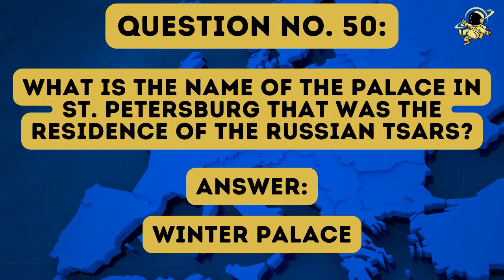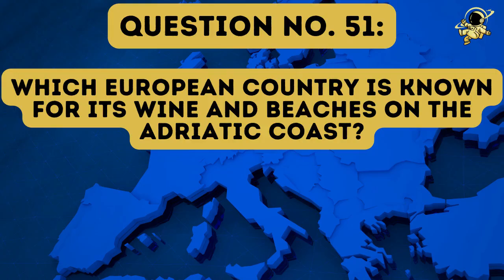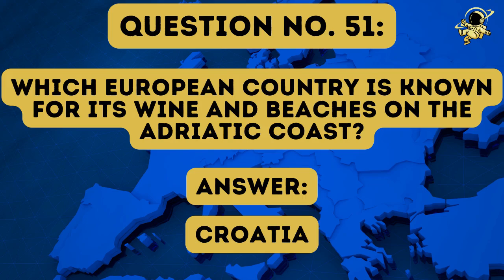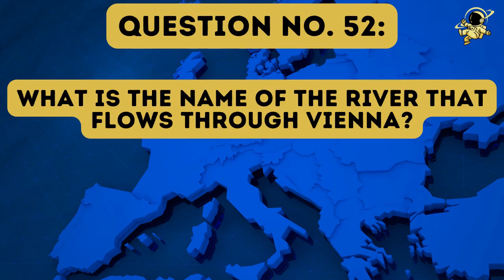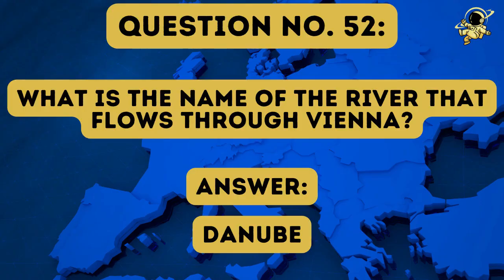Congratulations, you already made it half through the game. I hope you scored a lot so far. But let's see what you do in the second half. Question number fifty-one: Which European country is known for its wine and beaches on the Adriatic coast? And the answer to question number fifty-one is Croatia. Question number fifty-two: What is the name of the river that flows through Vienna? And the answer to question number fifty-two is once again our old friend, the Danube.